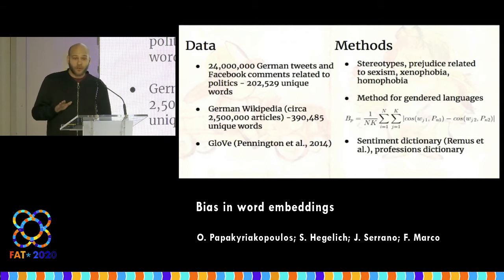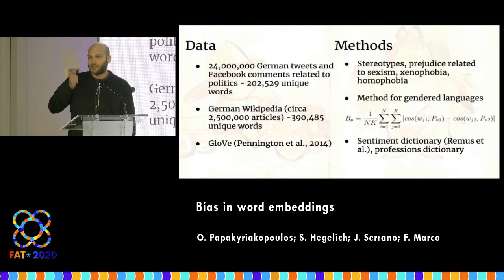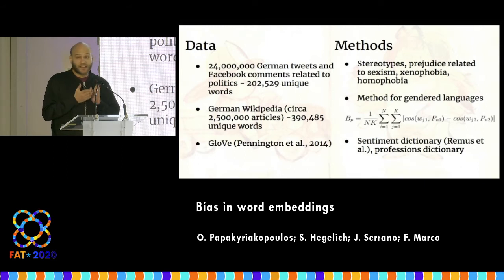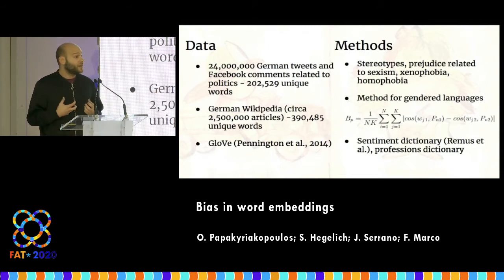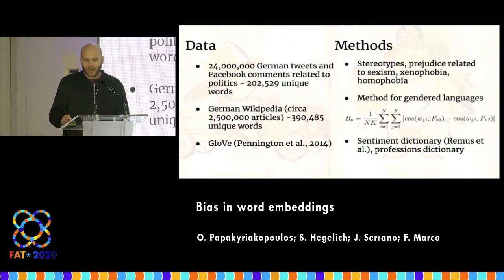We note that gender and sexuality are spectra, but here we only looked at men and women, and homosexuality and heterosexuality. We extended existing methods for stereotype detection for gendered languages, and we also developed a dictionary-based method for evaluating prejudice in the embeddings.